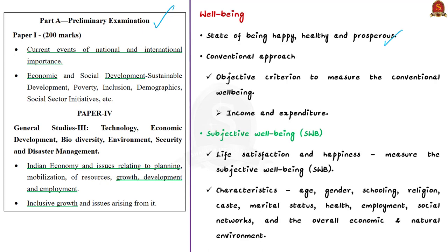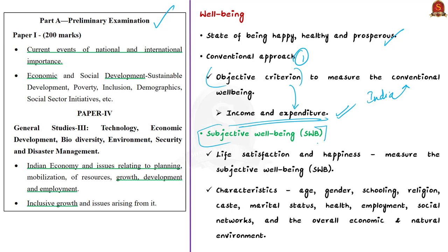Well-being is the state of being happy, healthy, and prosperous. There are two distinct approaches to measure it. The first is the conventional approach, which uses variables like income and expenditure to measure well-being. This approach is used by many countries, including India. The second measure, which is getting popular recently, is the measurement of subjective well-being.